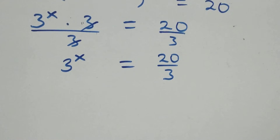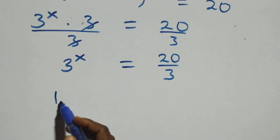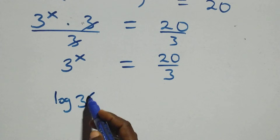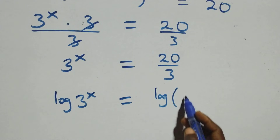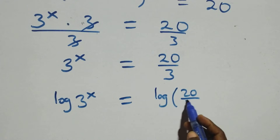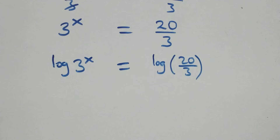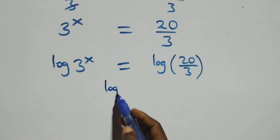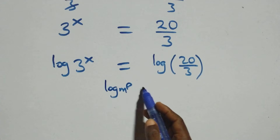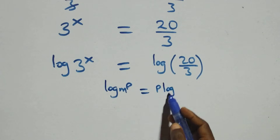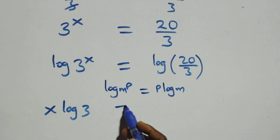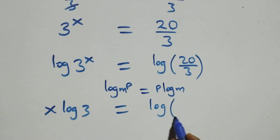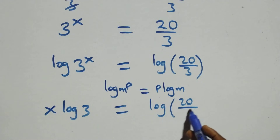The next step is to take log on both sides. We have log of 3 raised to power x equals to log of 20 over 3. From here we apply the power rule of logarithms: log n raised to power p is the same thing as p times log n. So this becomes x log 3 equals to log(20/3).